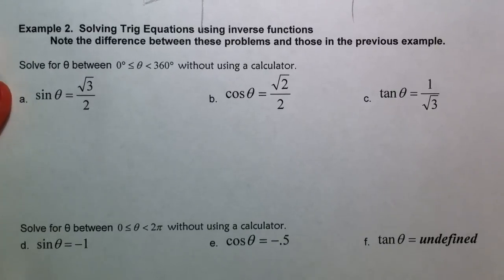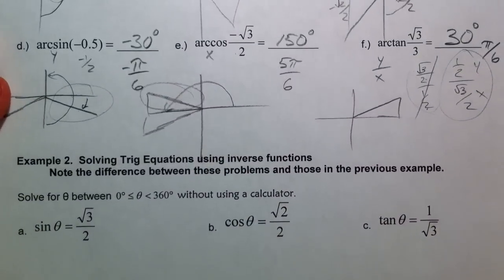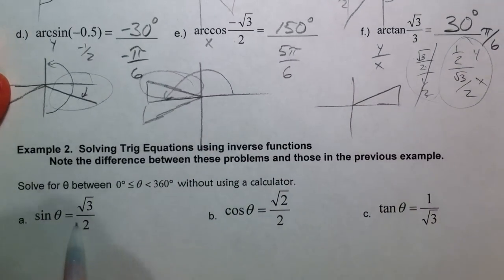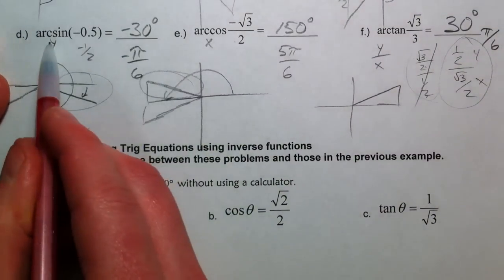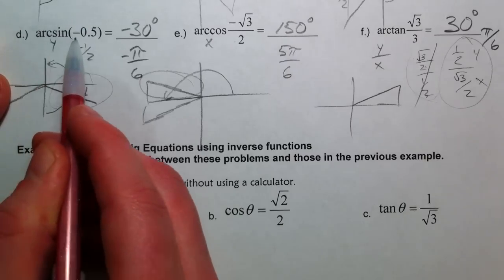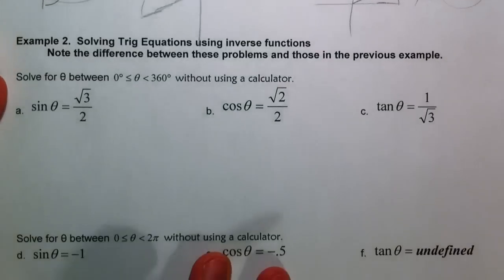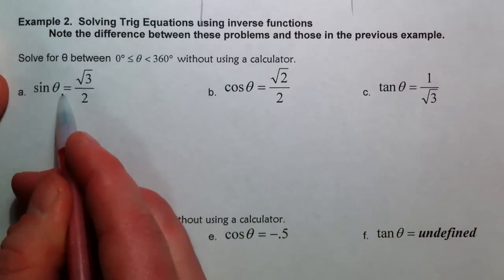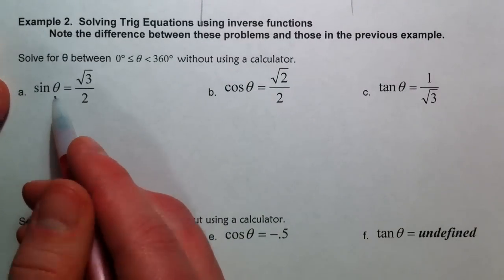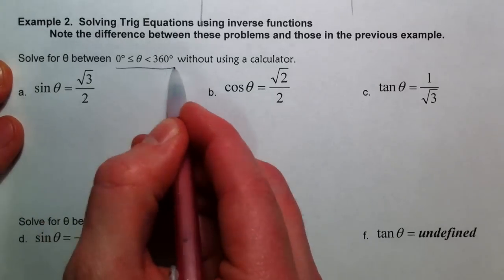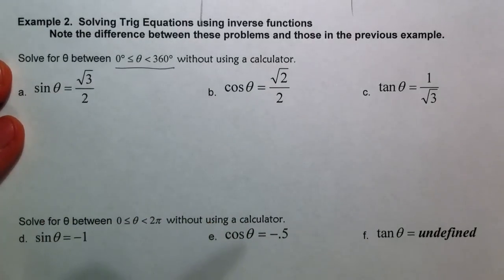Alright, in continuing, I want us to see the difference between what we're doing now, where we have sine of theta equals something, and what we did before where we did inverse sine. This is where technically you could have an infinite amount of answers, but we've said I only want all the answers between 0 and 360.